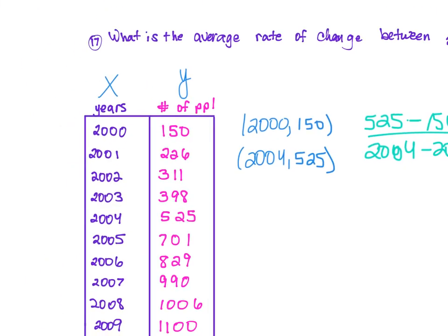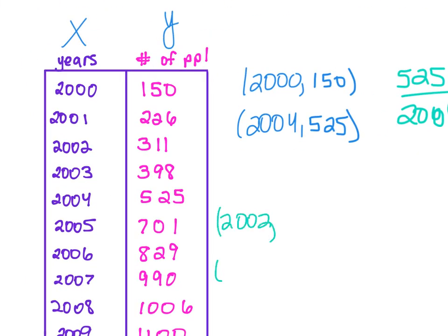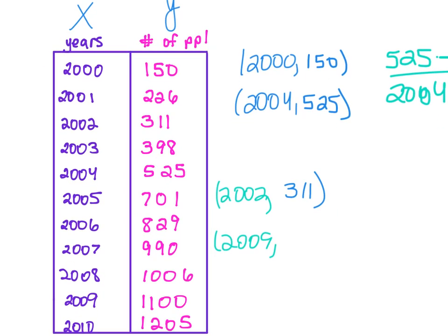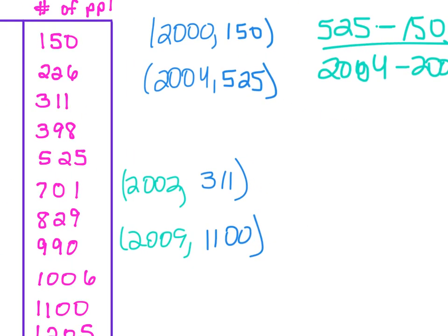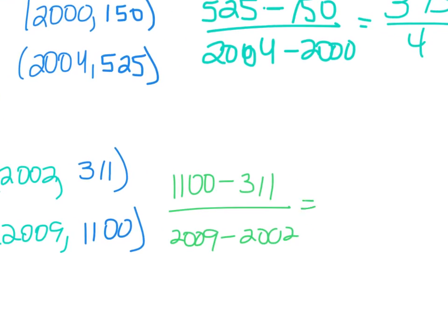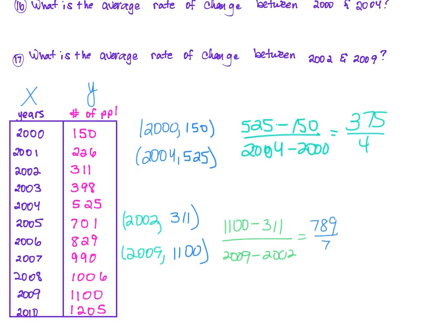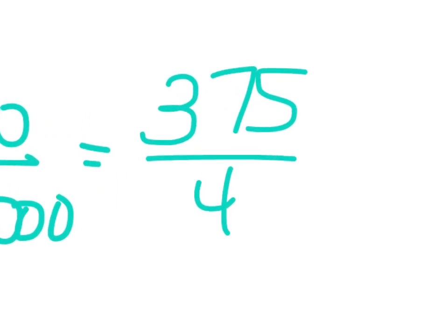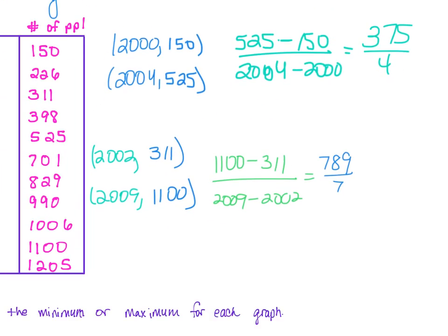Between 2002 and 2009: population in 2002 is 311, in 2009 is 1,100. Average rate of change: 1,100 minus 311 over 2009 minus 2002 equals 789 over 7 — that doesn't simplify. If the average rate of change is positive, the population is increasing; if negative, it's decreasing.